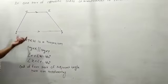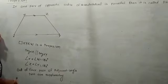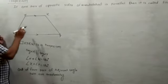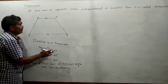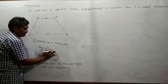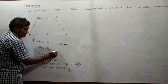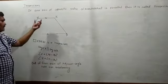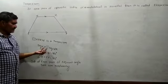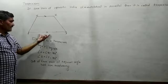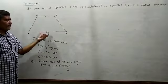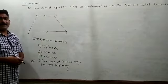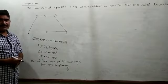Here I will say that segment XY is parallel to segment WZ. This is the symbol for parallel lines. So, segment XY is parallel to segment WZ. If one pair of the opposite sides are parallel, then the quadrilateral is called a trapezium.